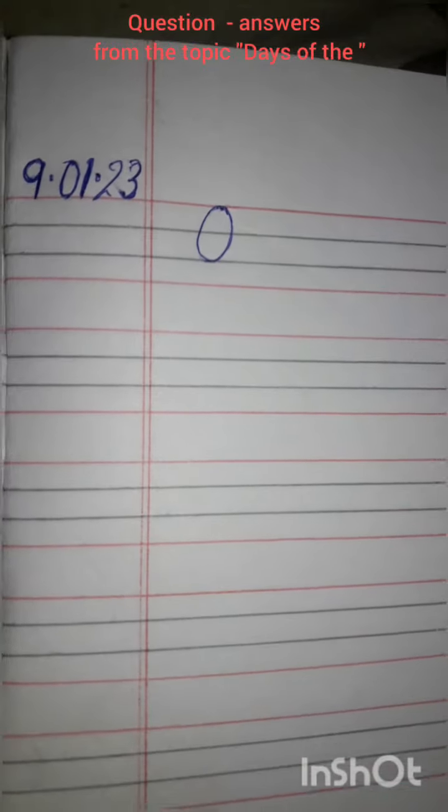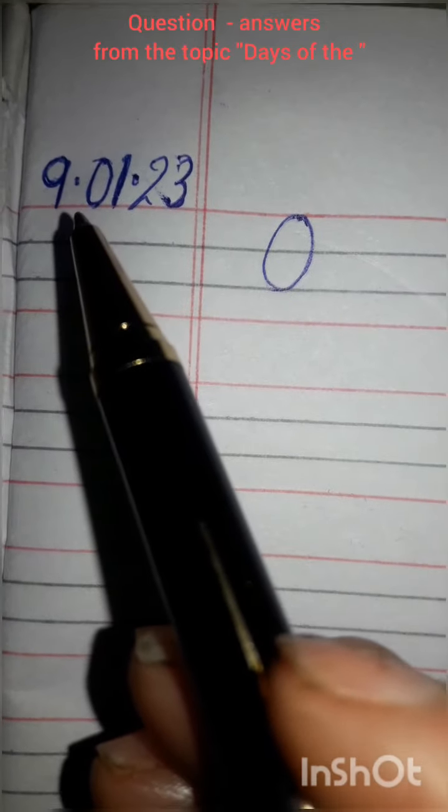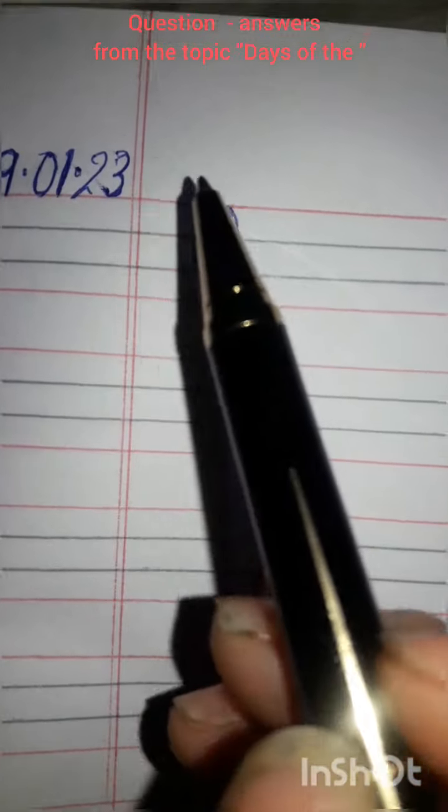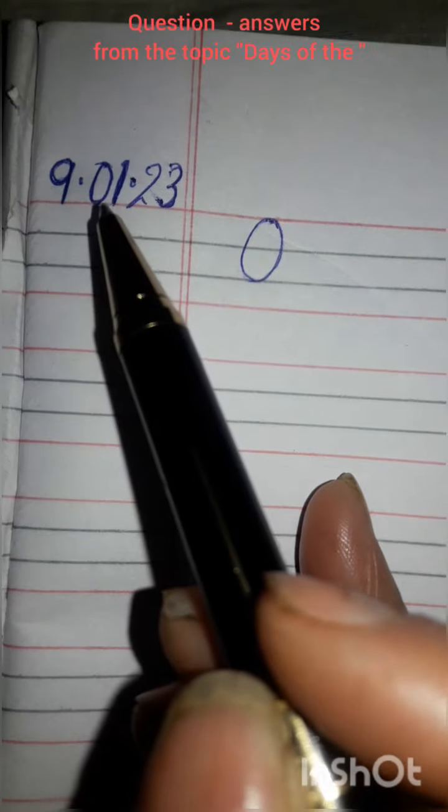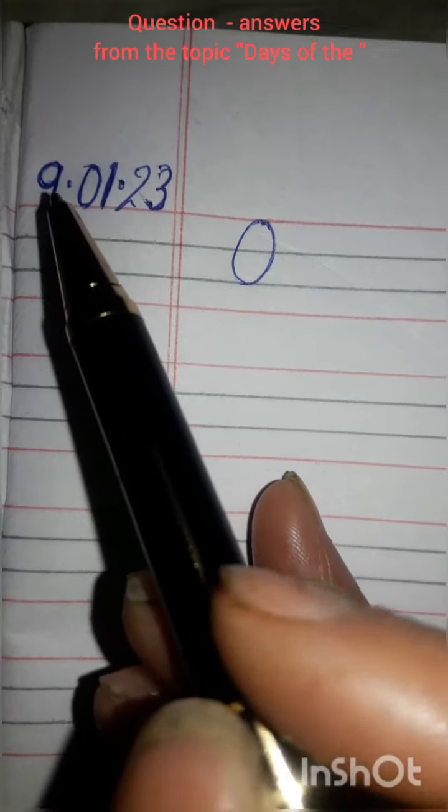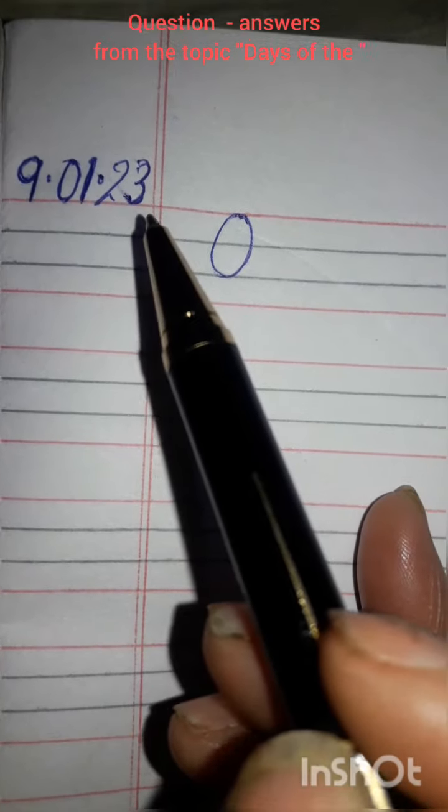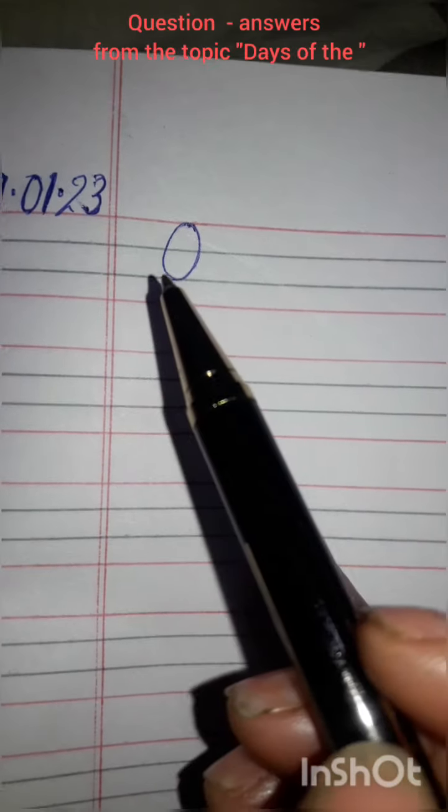I hope you all have opened that. So firstly you will write down today's date in this corner and the date is 9.01.23 because there are 12 months in a year. This is the first month which I have written here. Today's date is 9, and the year is 2023. It's a new year you know that and today we are going to do the first work of the year.